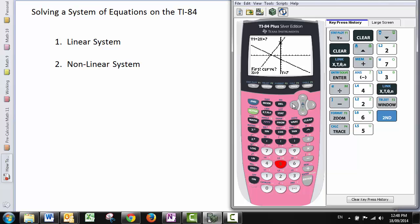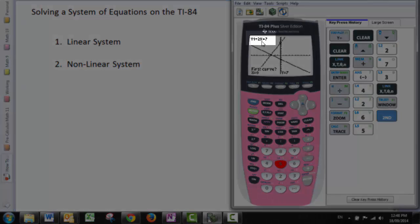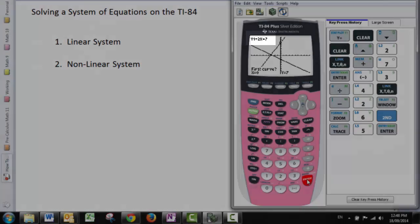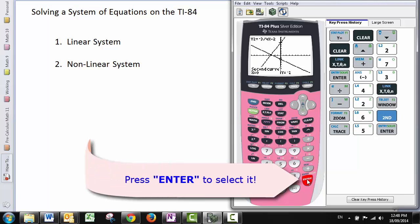The calculator asks us for the first curve. It means which equation. You can see right now y1 is highlighted here. That's good. And y2 is the second curve. That's the other equation that I want for the intersection.